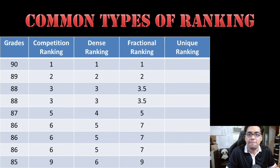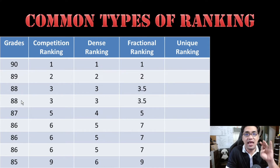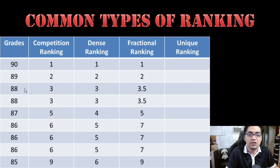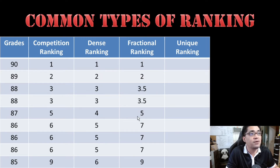Next we have what we know as fractional ranking. In fractional ranking, you will see immediately that it can involve fractions or decimals. For the first placer, you still have number one. For the second placer, you still have number two. The way that fractional ranking deals with ties is this: you take the third place and the fourth place, so that's three and four. You add the two of them — three plus four — and then you divide it by the number of ties. So you have three plus four equals seven, and because there are two grades with this particular value, seven divided by two — that's why you get 3.5 here. 87, the next grade, is still fifth place because it has no tie.